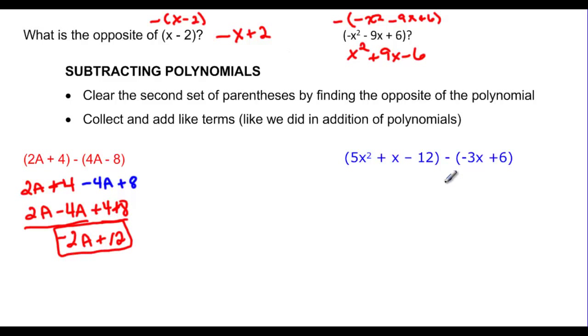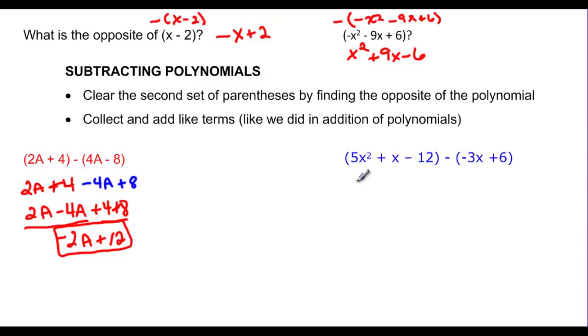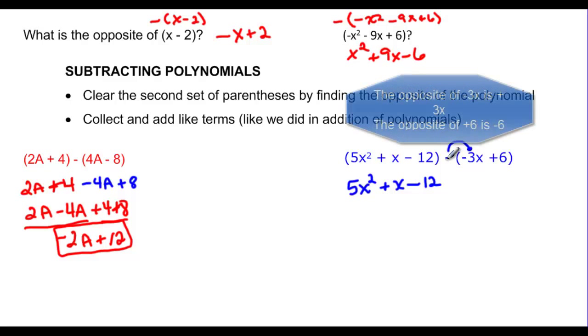And working on this problem, if I write my first polynomial, I have 5x squared plus x minus 12. Another way to think about this is that you're going to distribute the negative. If I distribute the negative, it's a negative times a negative, which gives me a positive 3x. And then the other way to think is, what's the opposite of negative 3x? Positive 3x. And if I go back to my distributive, you have to remember to distribute all the way through.